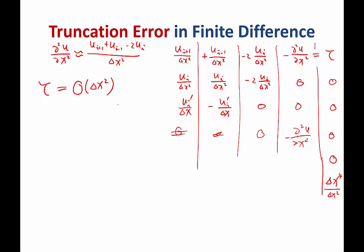What this big O notation means is that as delta x goes to 0, the rate of decay of this truncation error is delta x squared.